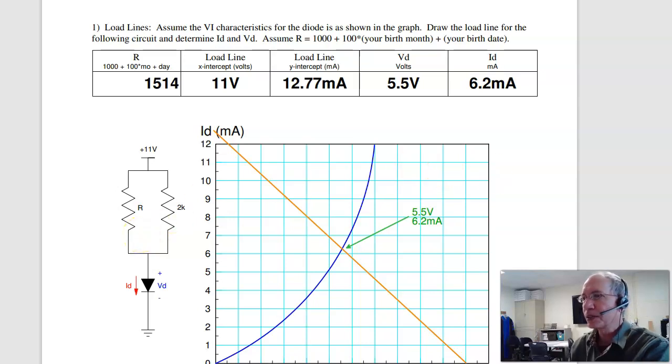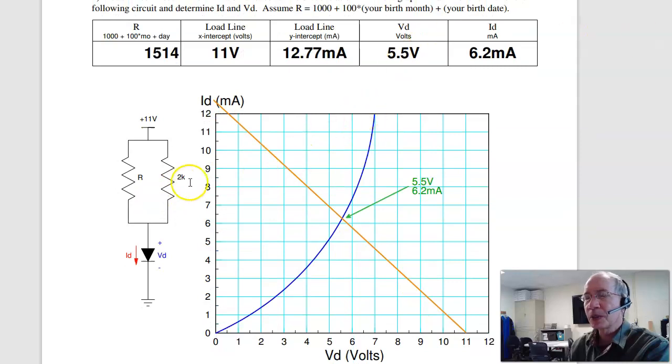To do that, I'll first combine these two in parallel. R is your state. Assuming 1514 ohms, these two in parallel give you some resistance. The current then is voltage over R.